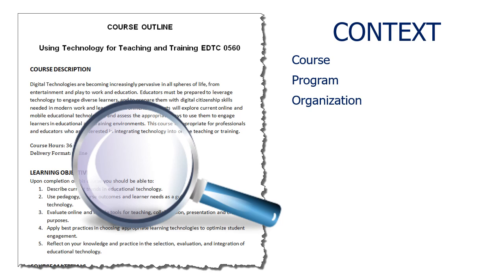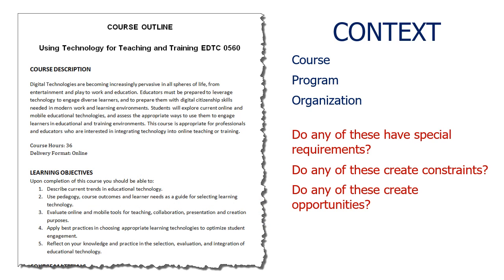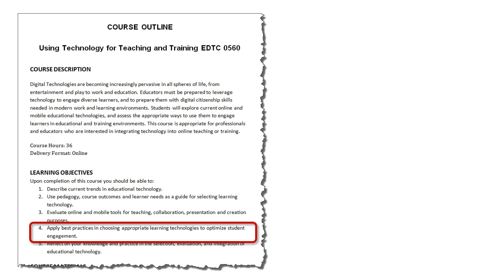Some of that information includes the demographic makeup of our target learners and the faculty who lead the course. It's important to ask if the course, program, or organization have any special requirements that could influence your technology choices — do they create any particular constraints on the range of tools you could consider, or any unique opportunities for technology use? Now that I've focused on a specific learning objective and defined the context, I can return to my learning objective and ask what type of learning activity I'd like to use to help my students achieve that goal.